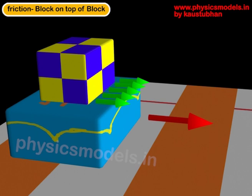So the lower blue box is being pulled to the right by a force which causes an acceleration. That's shown by the red arrow. The question is what will be the direction of the frictional forces between the upper yellow blue box and the lower one.